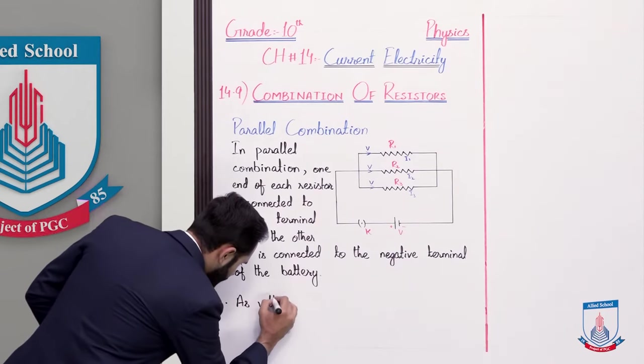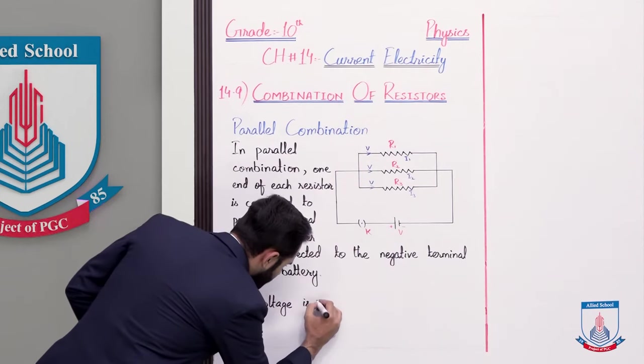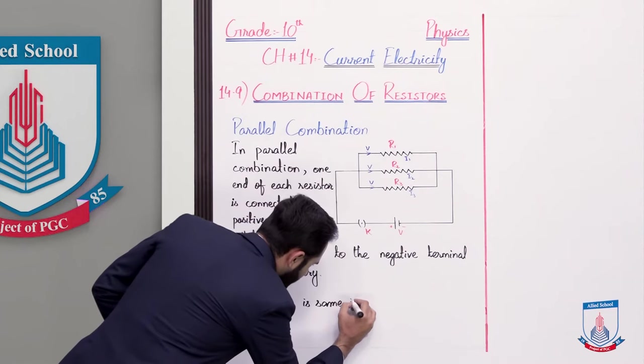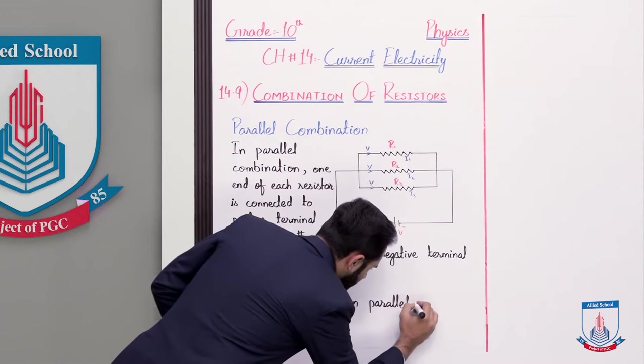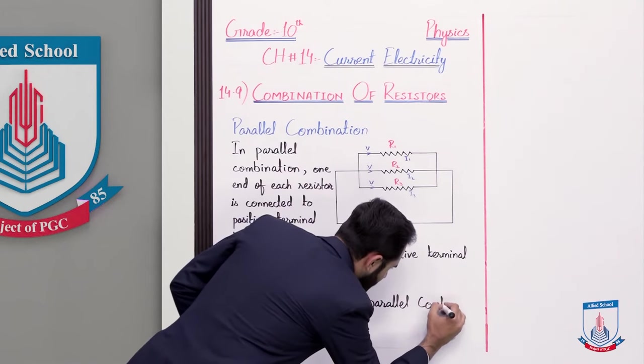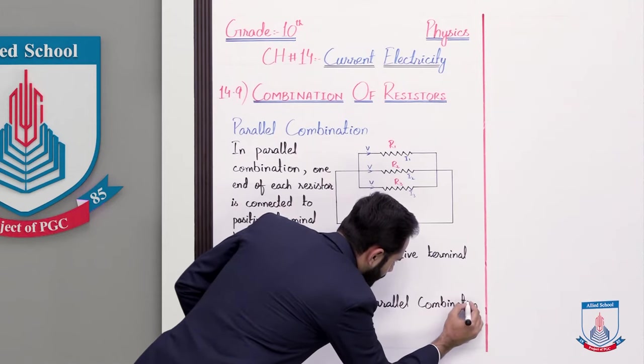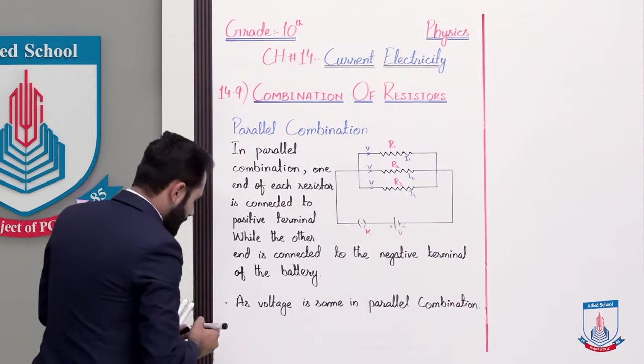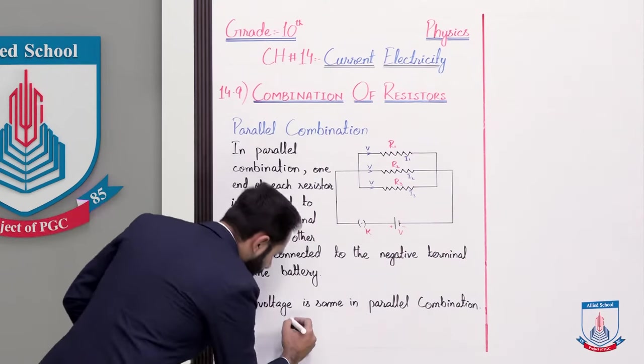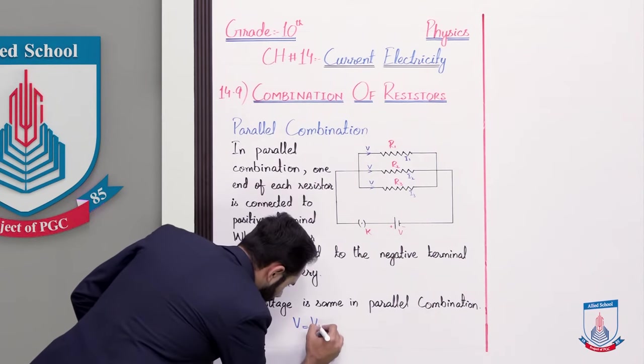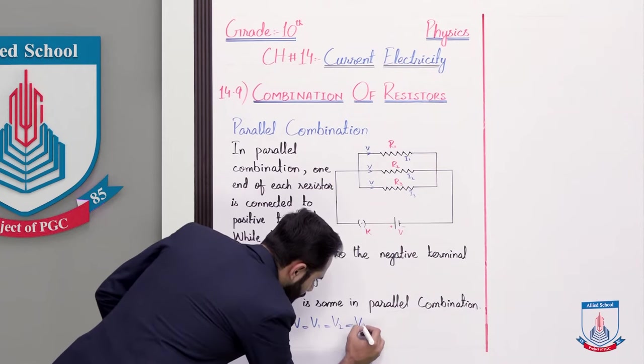As voltage is same in parallel combination, so we can write V is equal to V1 is equal to V2 and is equal to V3.